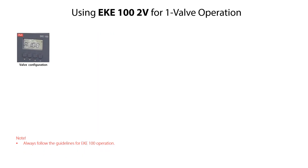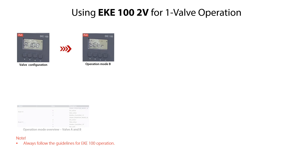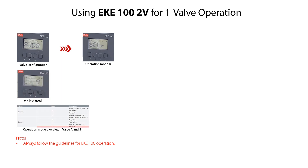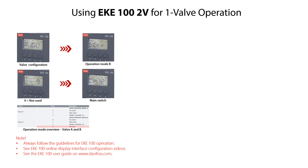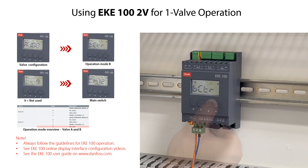Since we are configuring the EKE100 2V version for use with only one ETS12C valve, we need to set valve B as not used. From the AJ00 mode, press the arrow down key to access the operation mode B, specified as BCTR. Press the enter key to access the available operating modes. The value should be set as 9 for valve B to be not used. Press the arrow up or down keys, select 9 corresponding to valve B not being used. Press enter to confirm and return to the BCTR mode. Press the arrow up key to return to the main switch CR12 mode.